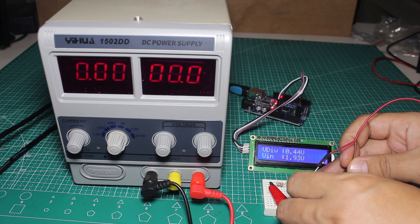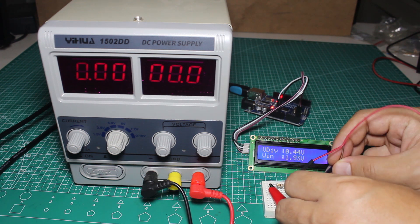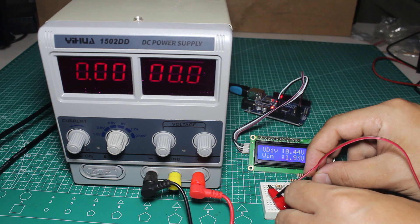So I connect the pin A0 to the output of the circuit and the ground of Arduino to the ground of circuit.